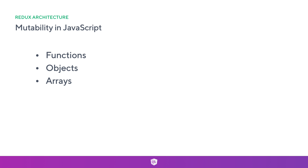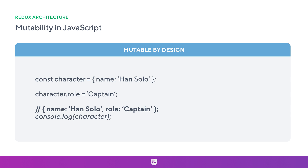We want to take a deeper look at how we can make these things immutable or think in an immutable way. Starting with objects: we have const character with a name property. Underneath, doing character.role equals 'captain' then console.logging it gives us both name and role — the whole object has been updated. If you're referencing this object in multiple places it could lead to unintended side effects that are difficult to debug.